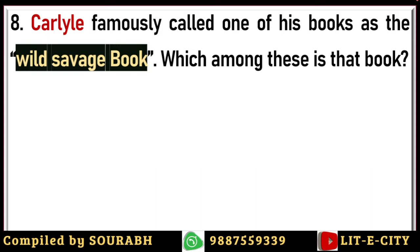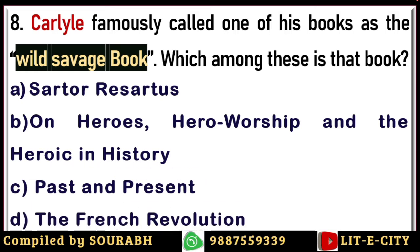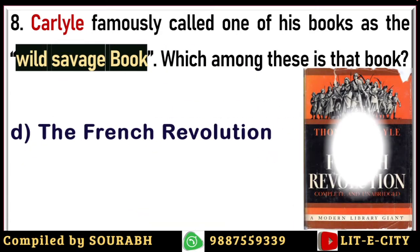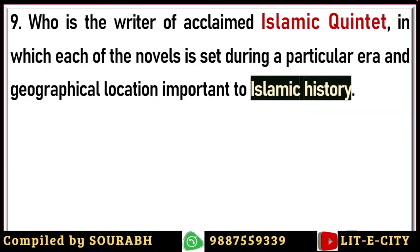Carlyle famously called one of his books a 'wild savage book.' Which among these is that book? Options are Sartor Resartus, On Heroes Hero-Worship and the Heroic in History, Past and Present, and The French Revolution. Carlyle was one of the greatest intellectual figures during the Victorian period. The correct answer is The French Revolution, about which he himself said it was a wild savage book. He took almost nine to ten years to complete this docudrama about that tumultuous period in French history.